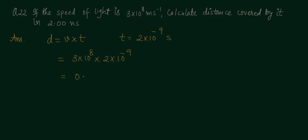0.600 meters. With 3 significant figures, 0.600 meters is the distance traveled by light.